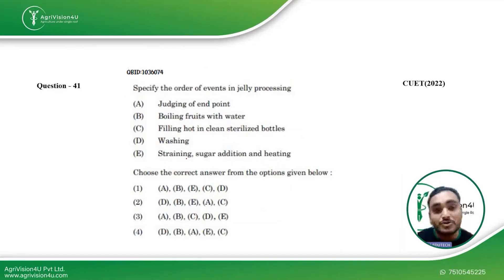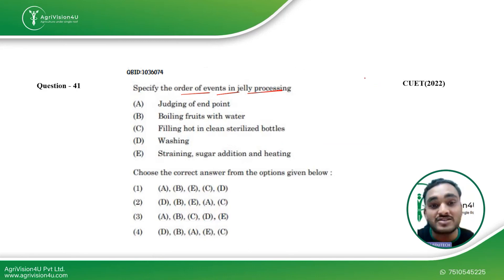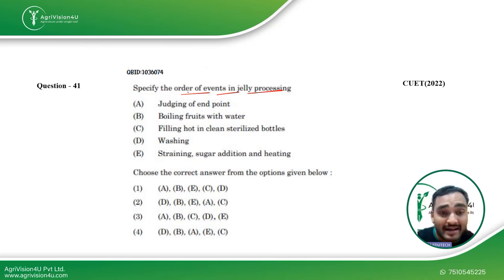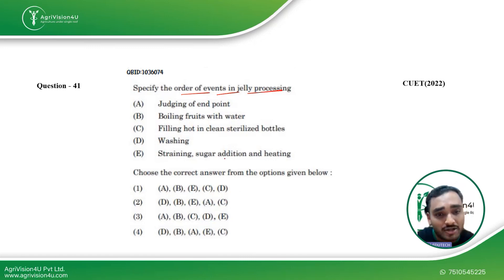Coming straight to the first question: we have to specify the order of events in jelly processing. You can very well expect questions from the processing part. It seems like a big question but it is actually easy. We need to arrange these steps in order: judging of endpoint, boiling fruits with water, filling hot in clean sterilized bottles, washing and straining, sugar addition and heating.